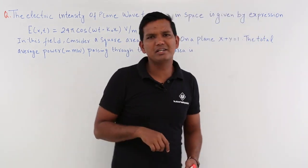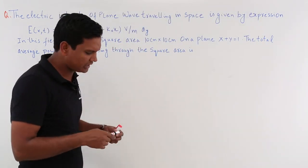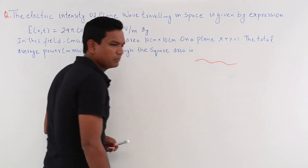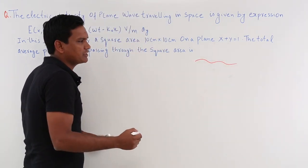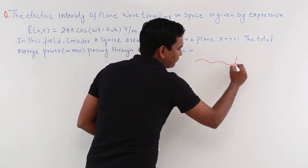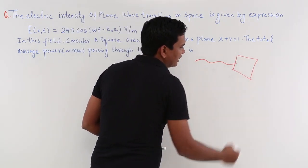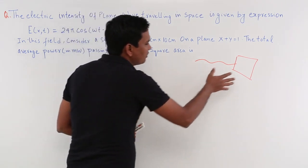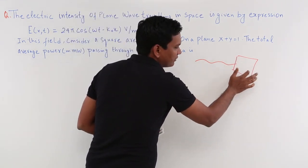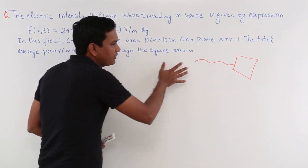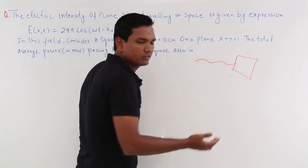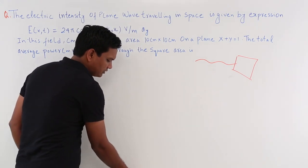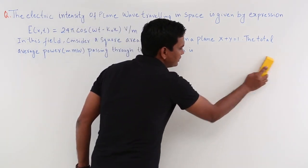To understand the physical meaning: an electromagnetic wave is moving or propagating, and there is a square area. How much average power is crossing this square of dimension 10 centimeter × 10 centimeter? That is the physical meaning of this question.